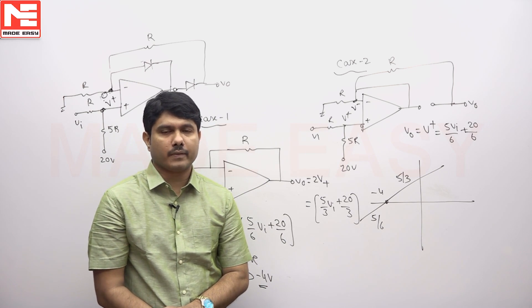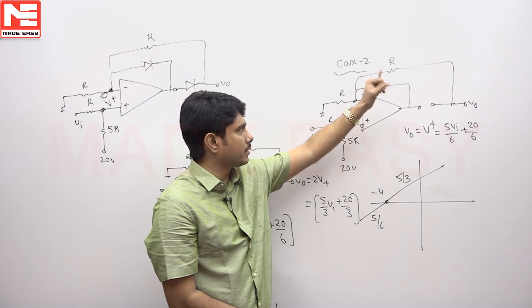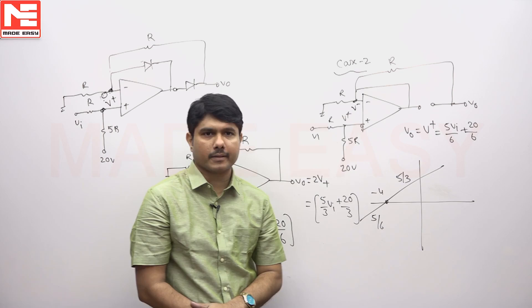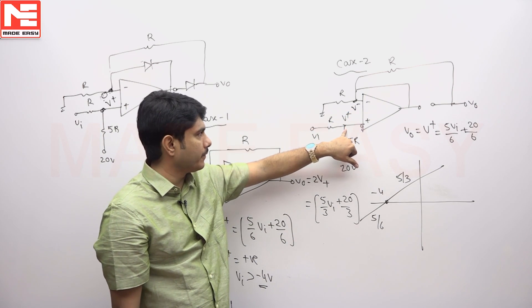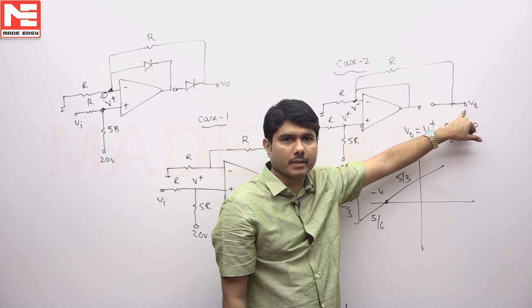D1 is on, D2 is off for negative cycle. Then this is a closed loop system but this is open. It's a closed loop system, V plus equal to V minus, directly you can write. This V minus, what you're expecting, became V plus.